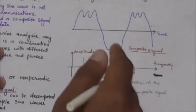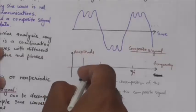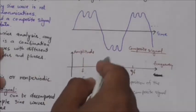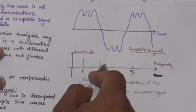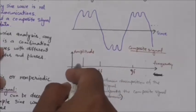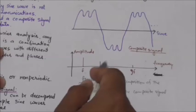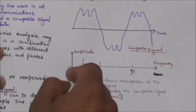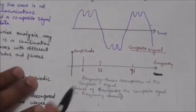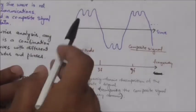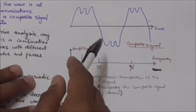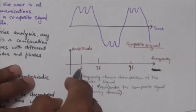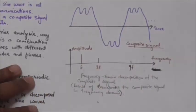The amplitude of the sine wave with frequency f is almost the same as the peak amplitude of the composite signal. The amplitude of the sine wave with frequency 3f is one-third of the first one, and the amplitude of the sine wave with frequency 9f is one-ninth of the first one. The frequency decomposition of a periodic signal is discrete — the frequencies are f, 3f, and 9f. Since f is an integer, 3f and 9f are also integers; there are no frequencies such as 1.2f or 2.6f.